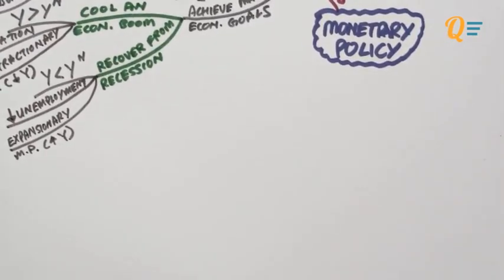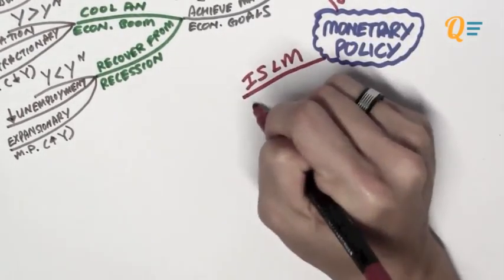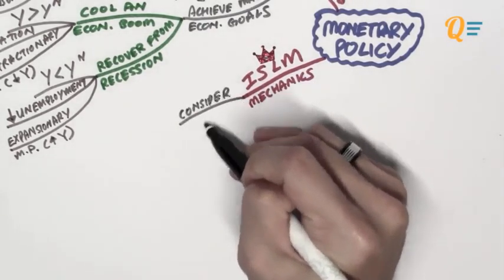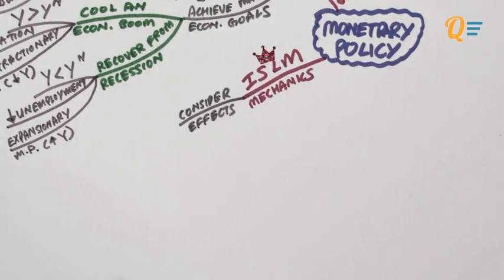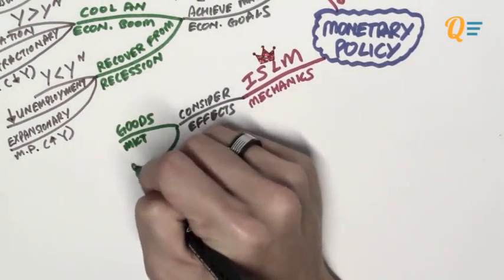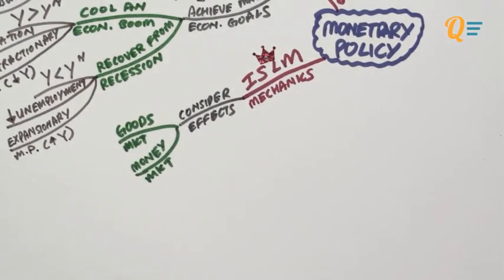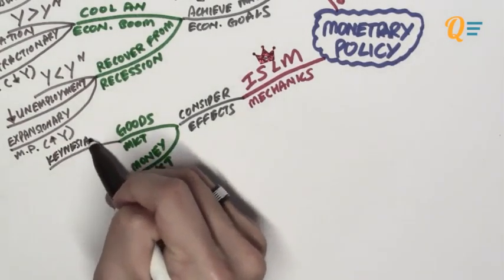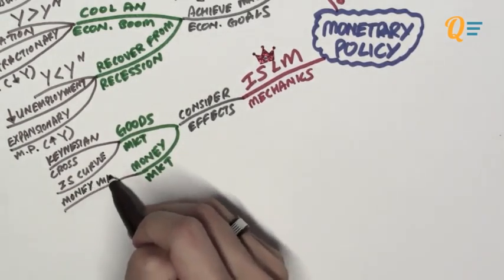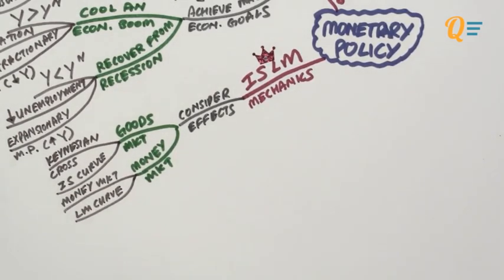Now, recalling the ISLM analysis from the fiscal policy video, we're going to talk about ISLM mechanics in detail, considering the effects of both the goods market and the money market. In the goods market, you use the Keynesian cross diagram, which gives birth to the IS curve. For the money market, you use the money market diagram, which gives birth to the LM curve.